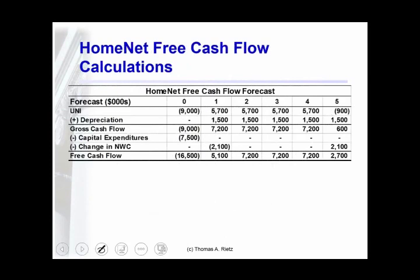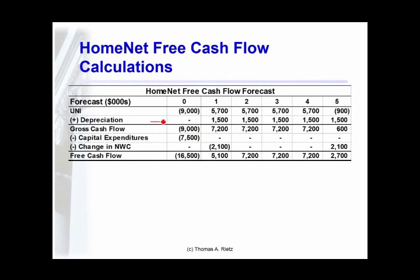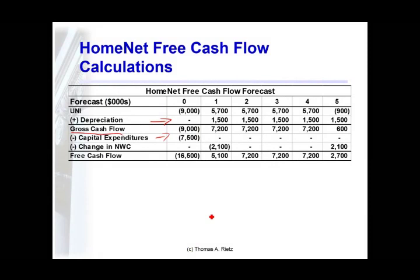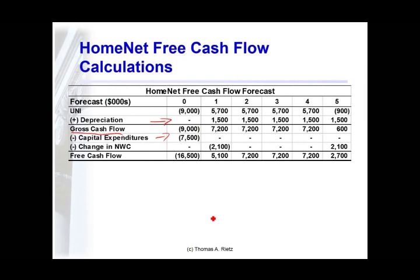Starting with our unlevered net income forecast, the first thing we do is add back depreciation. This gets us what's called the gross cash flow of the project. We subtract any capital expenditures, and what we have is the overall free cash flow for the project.